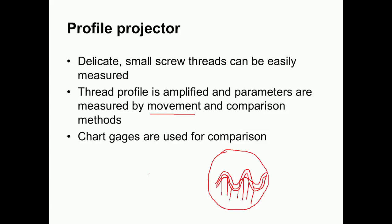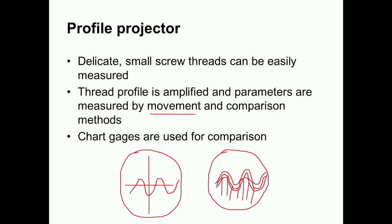In the movement method, on the screen we observe two cross lines. To measure pitch, we get the image and move the cross lines so that one line contacts the crest of a thread, and the micrometer reading is taken. Then it is moved to the crest of the next thread and another micrometer reading is taken. The difference between these two readings gives the pitch of the screw thread. This is how we use the profile projector for pitch measurement.